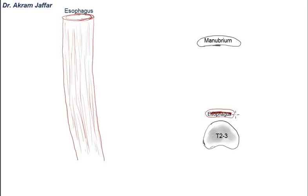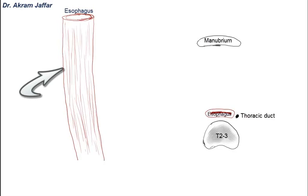To the left of the esophagus, in the upper part of the thorax and the superior mediastinum, is the thoracic duct — a large lymphatic trunk that continues up from the abdomen. When it enters the thorax, it passes behind the right part of the esophagus, and then at the level of the sternal angle, it passes behind the esophagus to become positioned on the left side of the esophagus in the superior mediastinum.